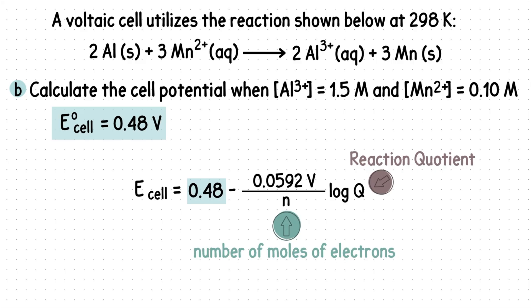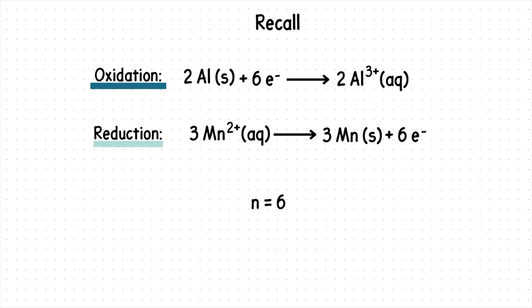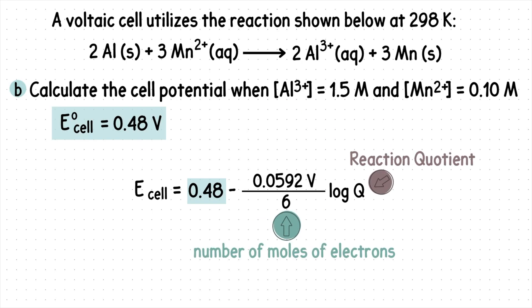We can plug in what we found in Part A. Next, we'll find N. Recall the number of electrons we had were 6, so N is 6, and we'll plug that in.